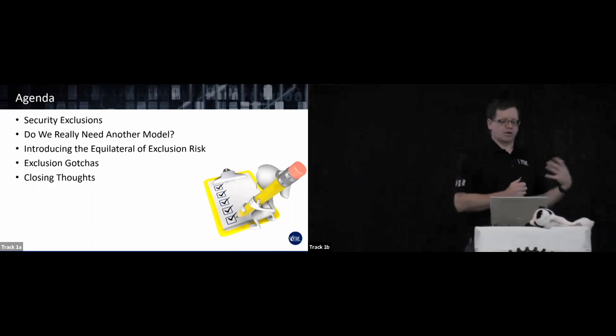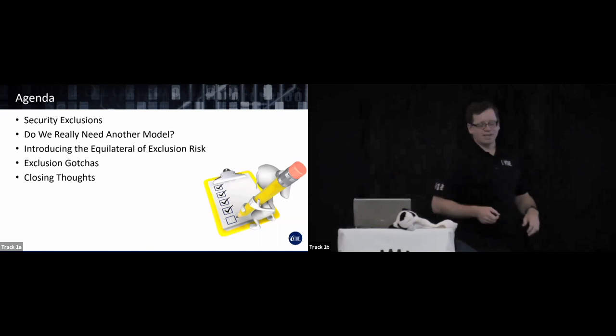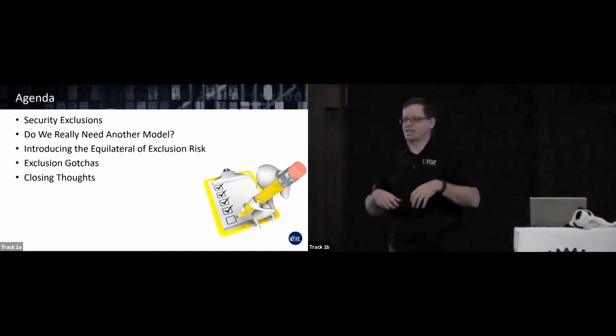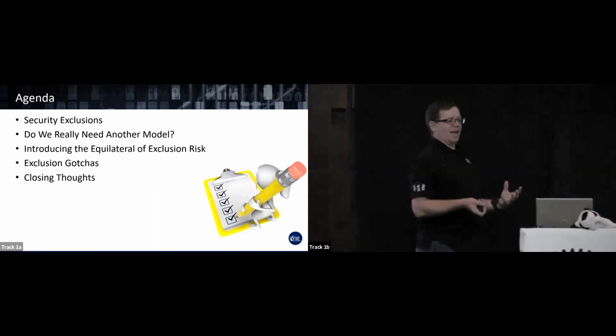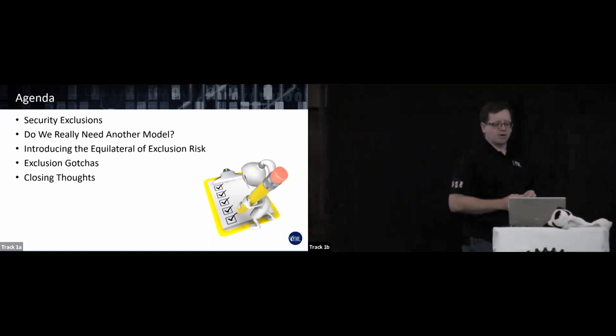We'll talk about the Equilateral of Exclusion Risk — the EER model. I know that's a mouthful. I'm pivoting off great successes like the Pyramid of Pain, and I know that if you're going to create a model it has to be small, compact, and easy to spell. We'll also talk about a couple of gotchas in writing security exclusions and wrap up with some closing thoughts.